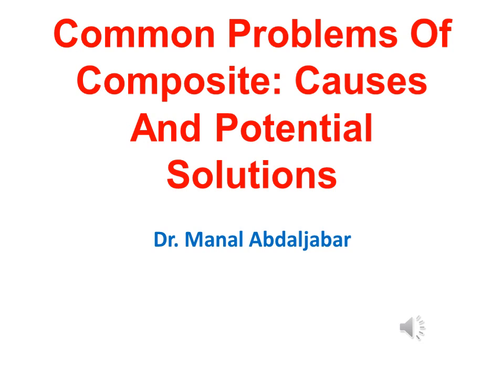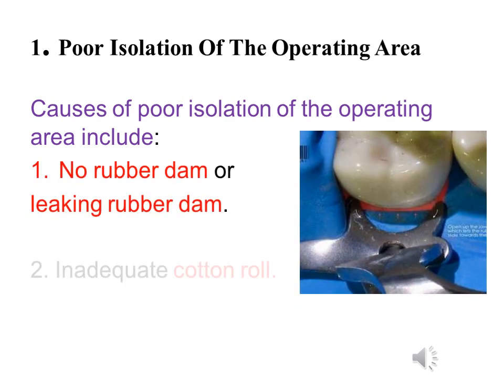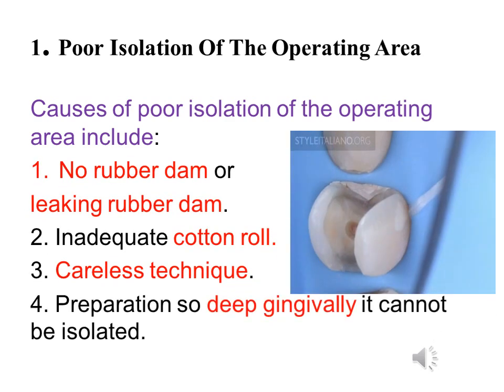Our lecture today covers common problems of composite causes and potential solutions. As discussed in the last lecture, we must have complete isolation of the field. Failed or poor isolation of the operating field or area will lead to the failure of the composite restoration.